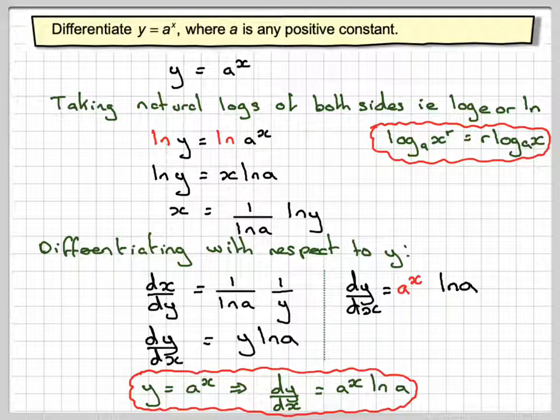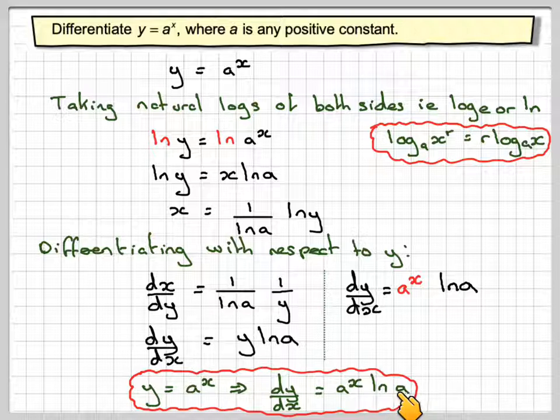And what we should, just before we go, we should just say, if we have y is equal to e to the x, then this will become e to the x ln of e. And notice that ln of e is 1, so we get y is equal to e to the x.